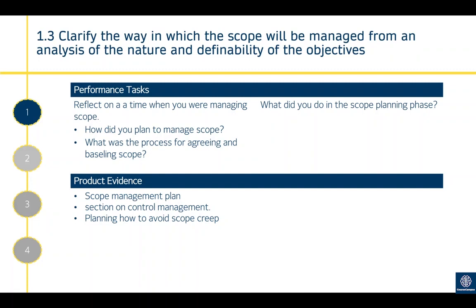If scope isn't clearly defined, lots of additional tasks and activities will just be thrown into the project. To complete those extra activities will take more time, so the project will go over time and also over budget. Ultimately it could result in project failure, where the project sponsor says the cost outweighs the benefits — and if the costs outweigh the benefits, the project will be cancelled. That's why it's important to manage scope — avoid it becoming bloated and resulting in failure.